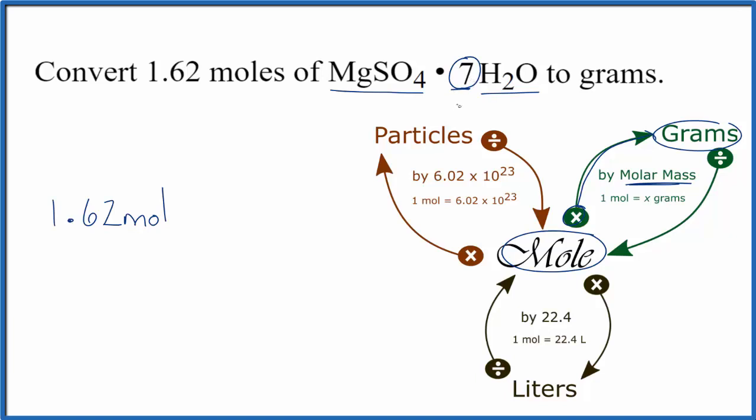If you need help finding the molar mass for MgSO4·7H2O, there's a link in the description and at the end of this video. When we do that, we end up with a molar mass of 246.52 grams per mole.